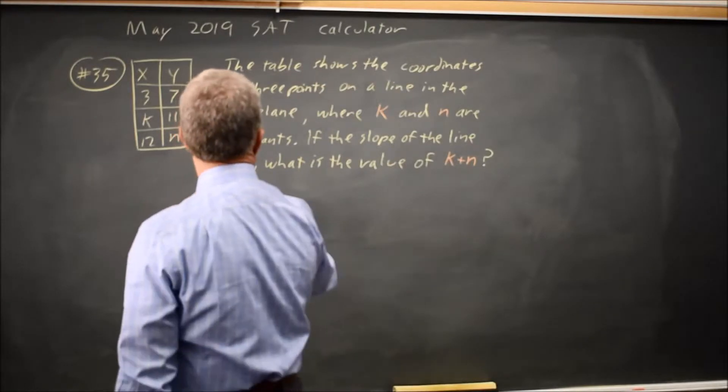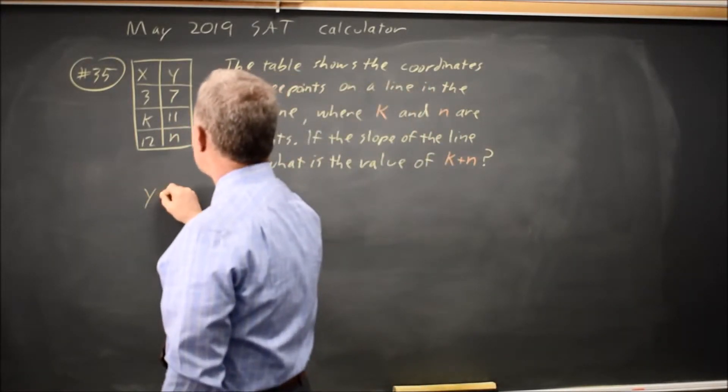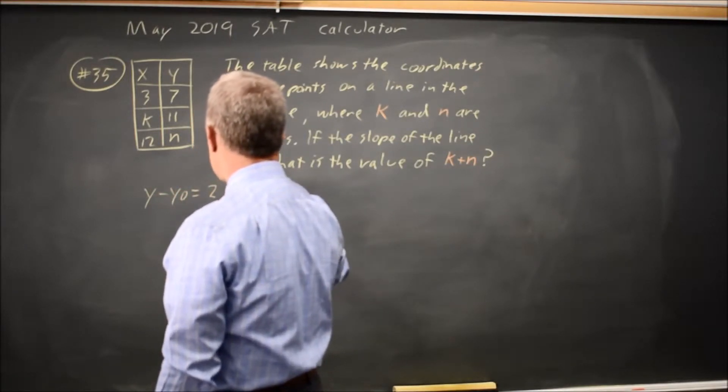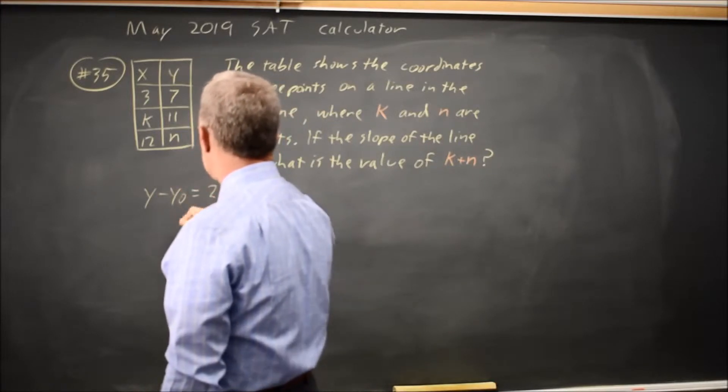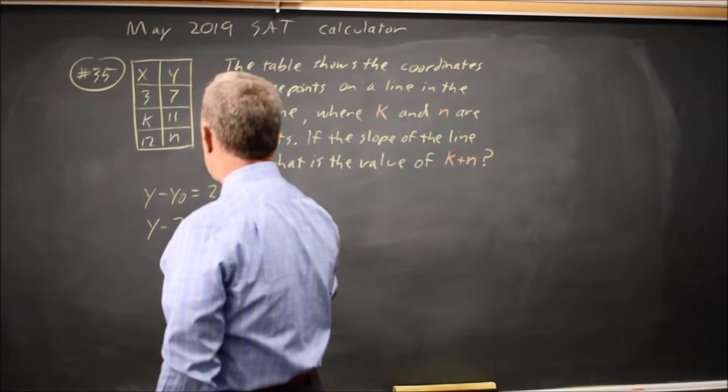So I'm going to find the equation of the line given that the slope of the line is 2. y minus y zero equals my slope 2 times x minus x sub zero.